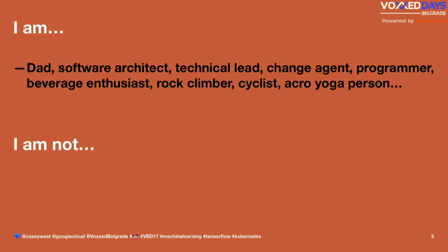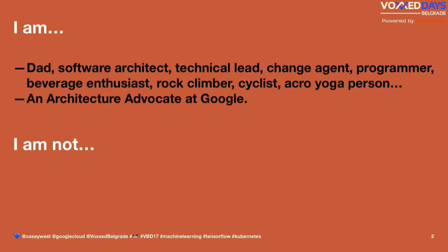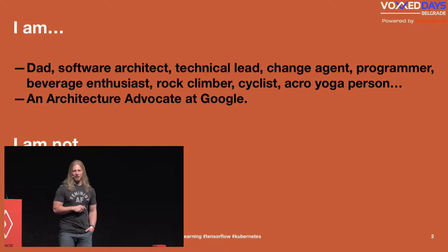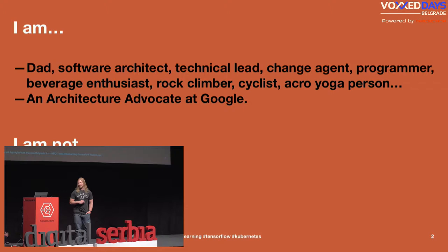I am an architecture advocate at Google. I spend time with large companies that have existing software — which can sometimes be referred to as legacy software. I like to call that the software that's actually making money, and that's okay. I try to help them get into the cloud and take advantage of it. But today we're going to talk about open source stuff and have a lot of fun.